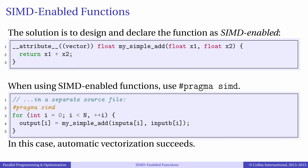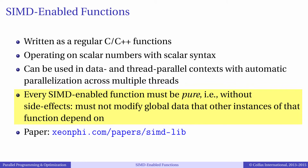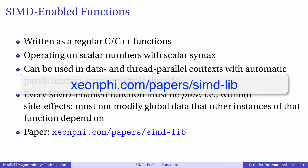Alternatively, instead of using the scalar form of the function call, we can pass a slice or whole array as the argument using array notation discussed earlier. In this case, the compiler will once again use the vectorized implementation of the function. Only pure functions may be declared and used as simd-enabled — this means the function must not modify any data outside the scope of the function, such as global and static variables. For more information and examples of using simd-enabled functions, refer to the Colfax Research publication at zionphi.com/papers/simd-lib.